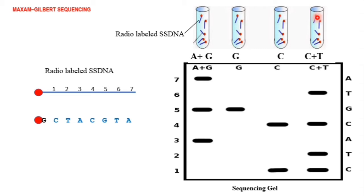After the chemical treatment of these four tubes, we load the samples onto a polyacrylamide gel to separate the different DNA fragments. Then we expose this polyacrylamide gel to autoradiography. Because the DNA is radio-labeled, it produces an autoradiograph, and we can see different bands in the autoradiography film.